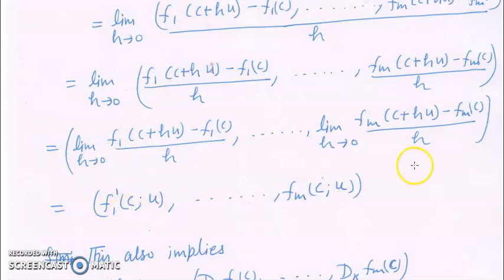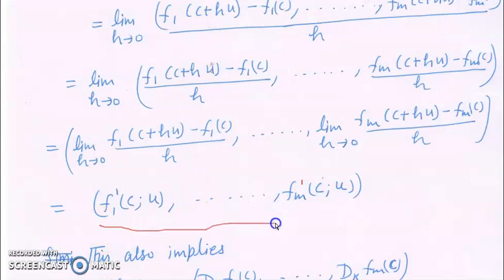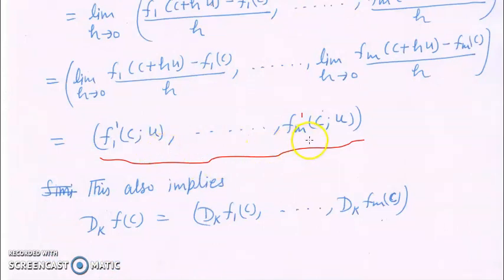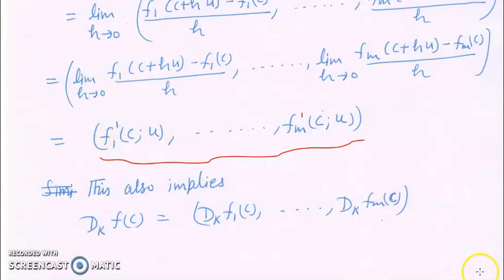So this gives us f1'(c; u) up to fm'(c; u). Because we assumed f'(c; u) exists, this whole term exists and f'(c; u) equals (f1'(c; u), ..., fm'(c; u)). This also implies that the kth partial derivative dk f(c) equals (dk f1(c), ..., dk fm(c)). So to find the directional derivative of f in direction u, determine the directional derivative for each component and combine them.